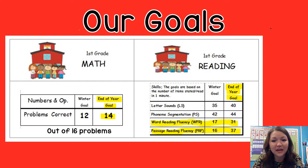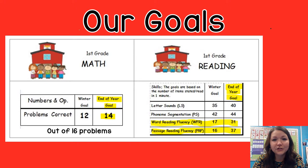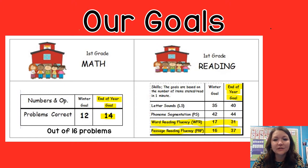Our first grade reading goal — we progress monitor on letter sounds, phoneme segmentation, word reading fluency, and passage reading fluency. For first grade, our major goals are word reading fluency and passage reading fluency. The end of the year goals are 31 words per minute for word reading and 37 words per minute for passage reading.